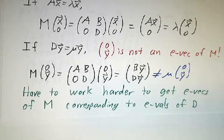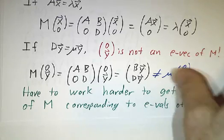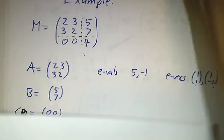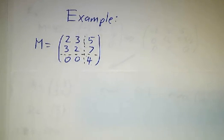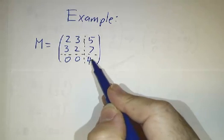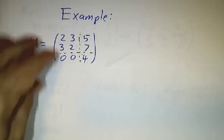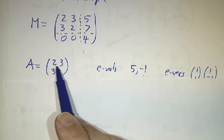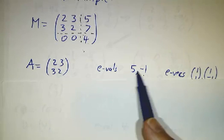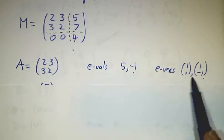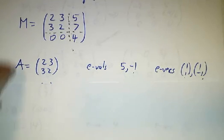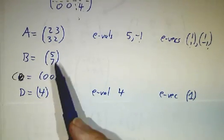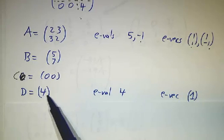The eigenvectors of A extend nicely, but the eigenvectors of D don't. The eigenvalues are fine, but if you want to find the eigenvectors, you have to actually write M minus lambda times the identity, row reduce, and do all that work. For example, consider an upper triangular matrix with an upper left block [2,3; 3,2] and a lower right block that is just the number 4 — a 1x1 matrix. For the block [2,3; 3,2], since it has the form ABBA, the eigenvalues are 2+3=5 and 2-3=-1, with eigenvectors [1,1] and [1,-1]. The 1x1 matrix is already diagonal with eigenvector 1 and eigenvalue 4.